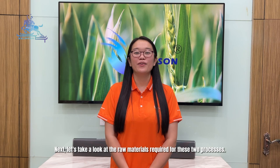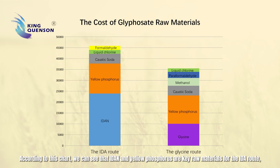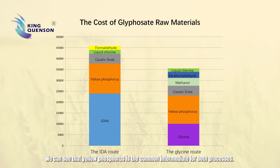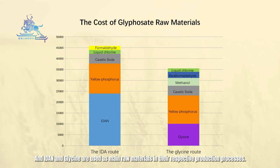Next, let's take a look at the raw materials required for these two processes. According to this chart, we can see that IDA and yellow phosphorus are the key raw materials for the IBA route, accounting for about 83% of total cost. For the glycine route, yellow phosphorus and glycine are the key raw materials, accounting for about 75% of total cost. We can see that yellow phosphorus is the common intermediate for both processes, while IDA and glycine are used as main raw materials in their respective production processes.